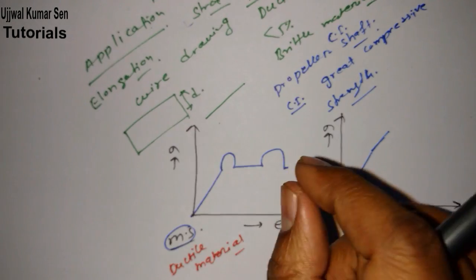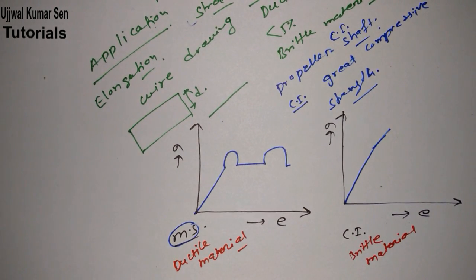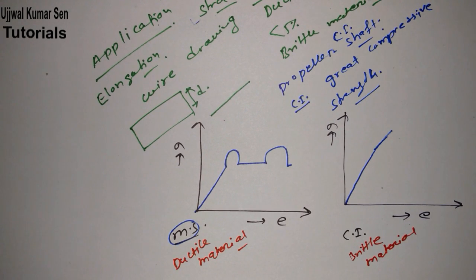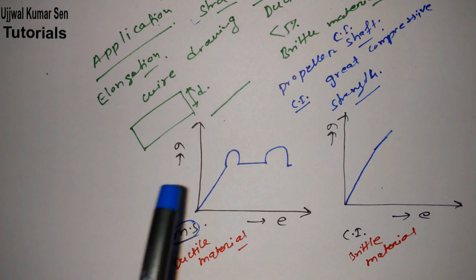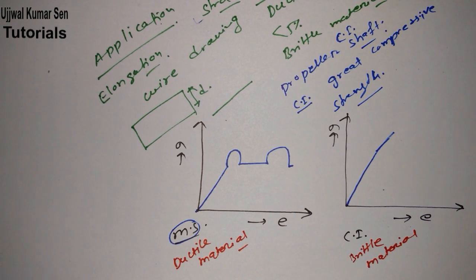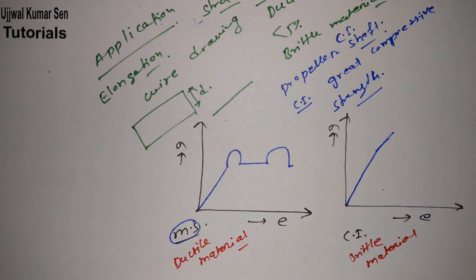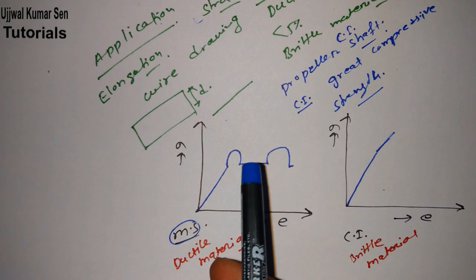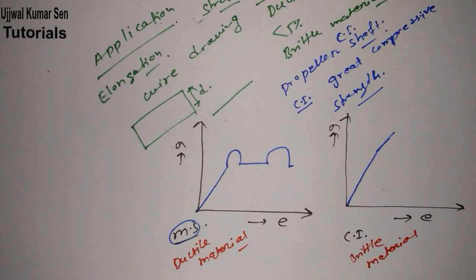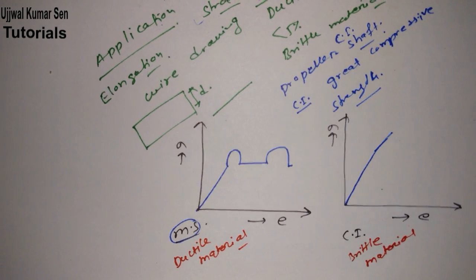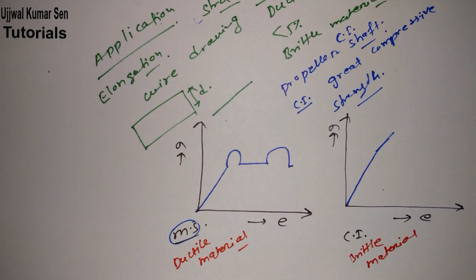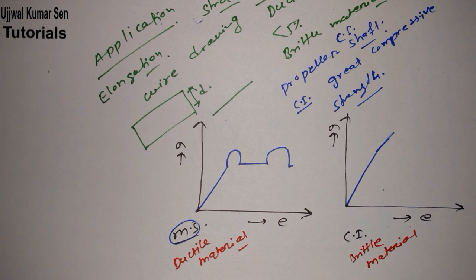The mild steel diagram is quite popular because we can understand each and everything from it — every point, everything we require to know in a stress-strain diagram. That's why I am sharing the mild steel diagram. If you are studying any book, you will definitely get the stress-strain diagram shown only for mild steel because it is quite useful. A common mistake people make is drawing only this one diagram for every material, but remember: every material has a different stress-strain diagram, so don't mix them up.